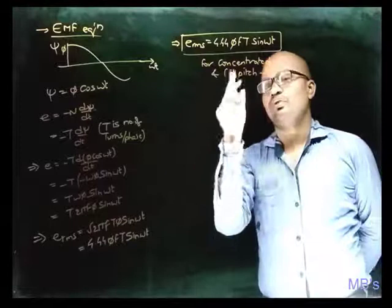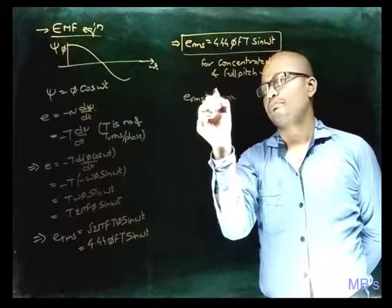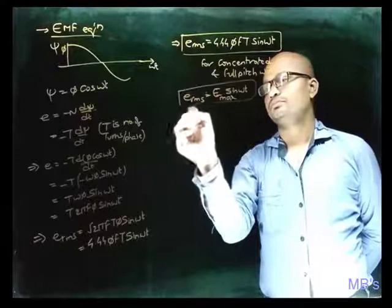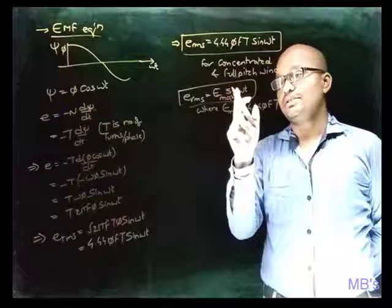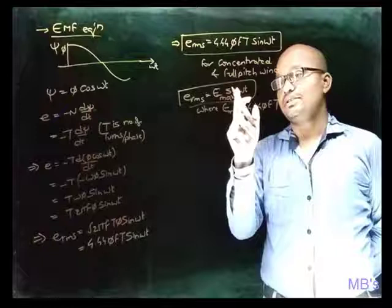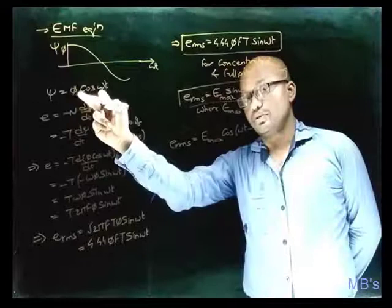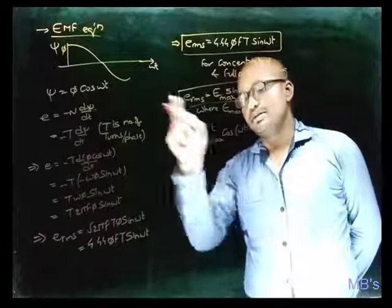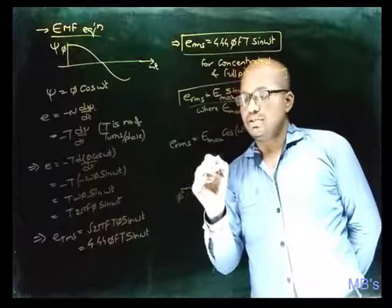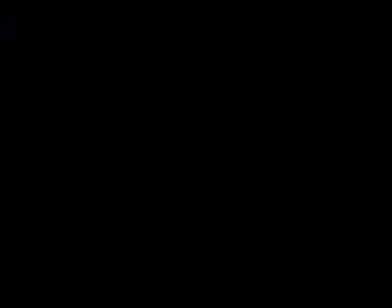What concentrated and full-pitch winding mean will be discussed in the next topic on armature winding. Here, 4.44φfT can be represented as E_max, where E_max = 4.44φfT. Representing the sine function in terms of cosine, we observe that the induced EMF lags behind the flux by 90 degrees — if flux is in one direction, the induced EMF will lag by 90 degrees. This is the convention used in phasor diagrams.